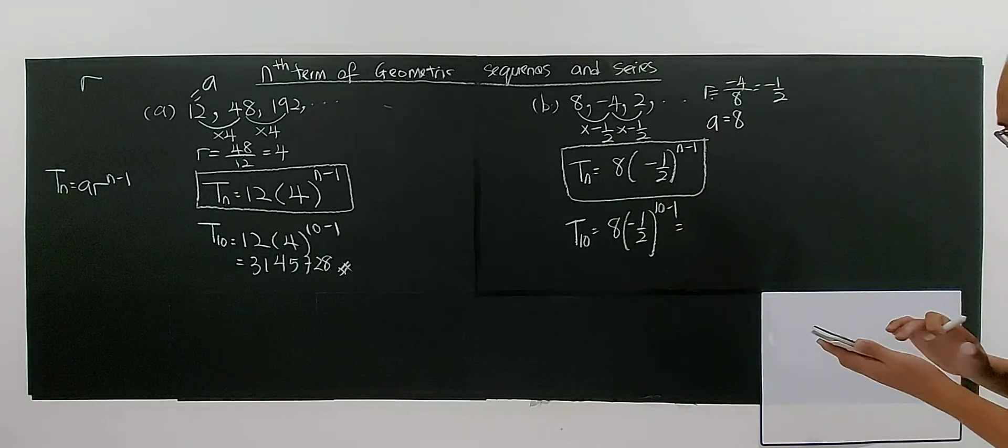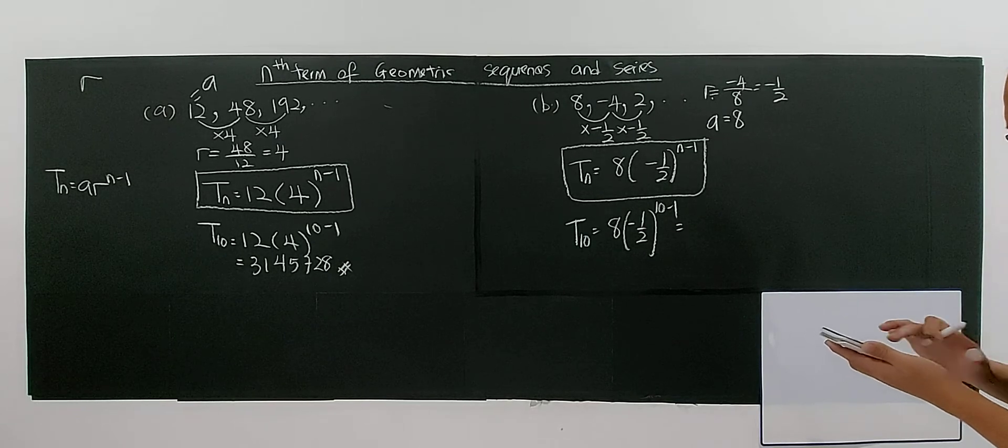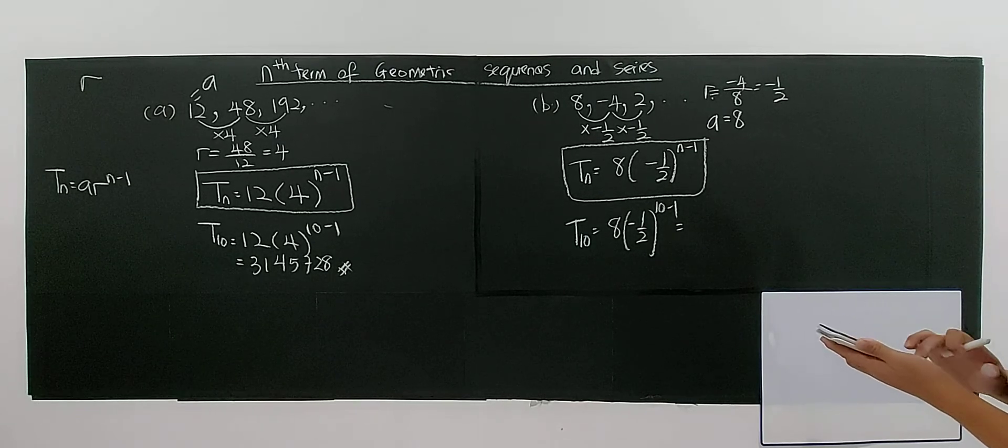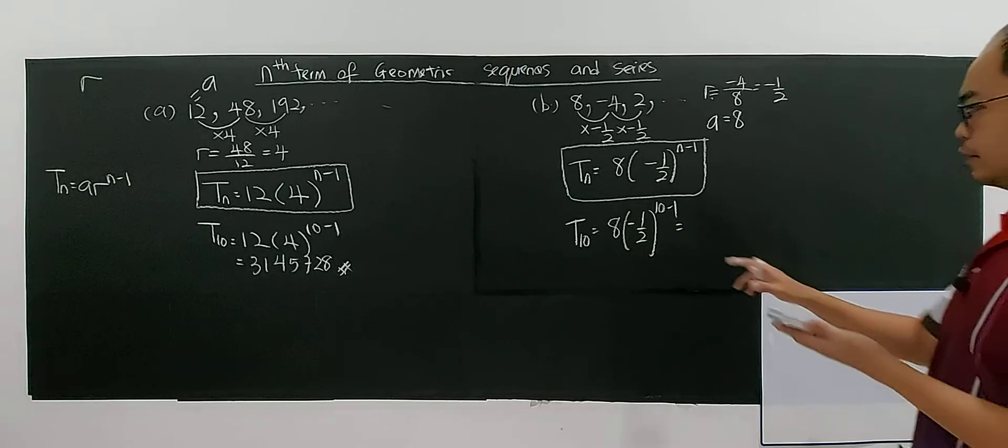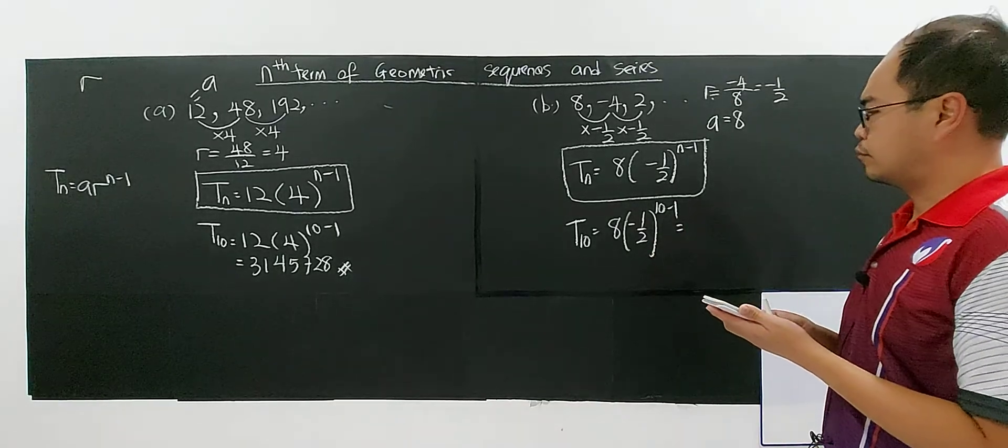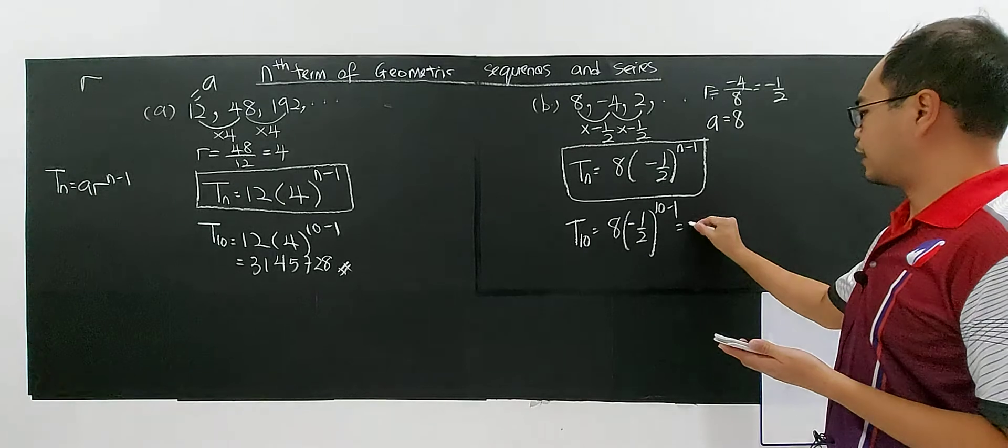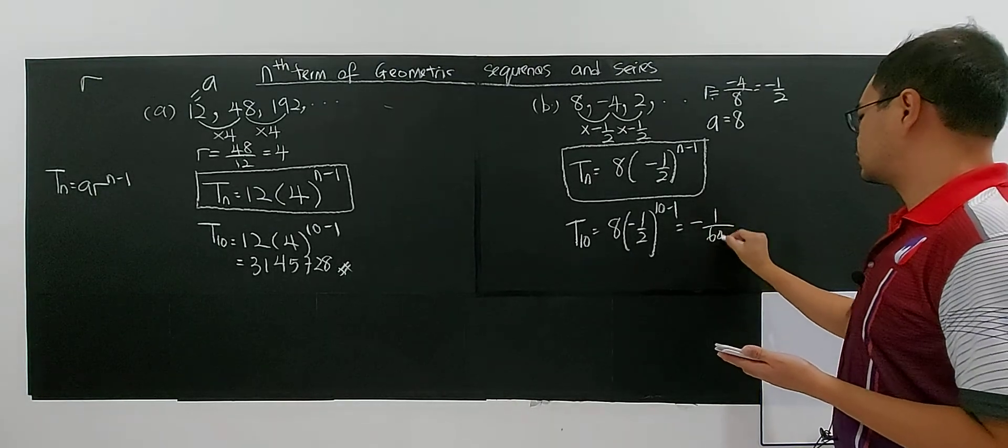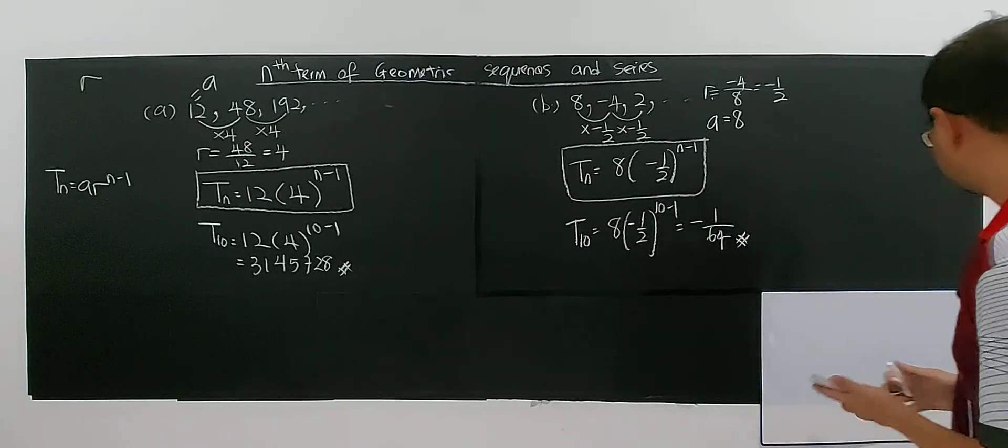So using calculator, you have 8 times negative 1 over 2 to the power of 9.